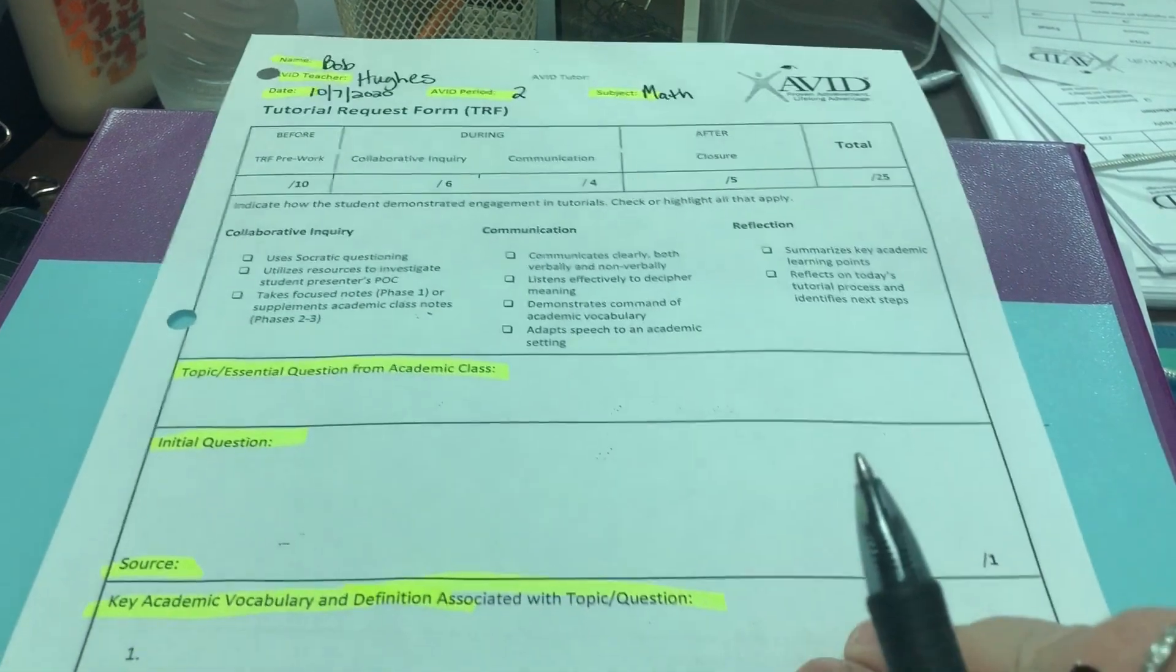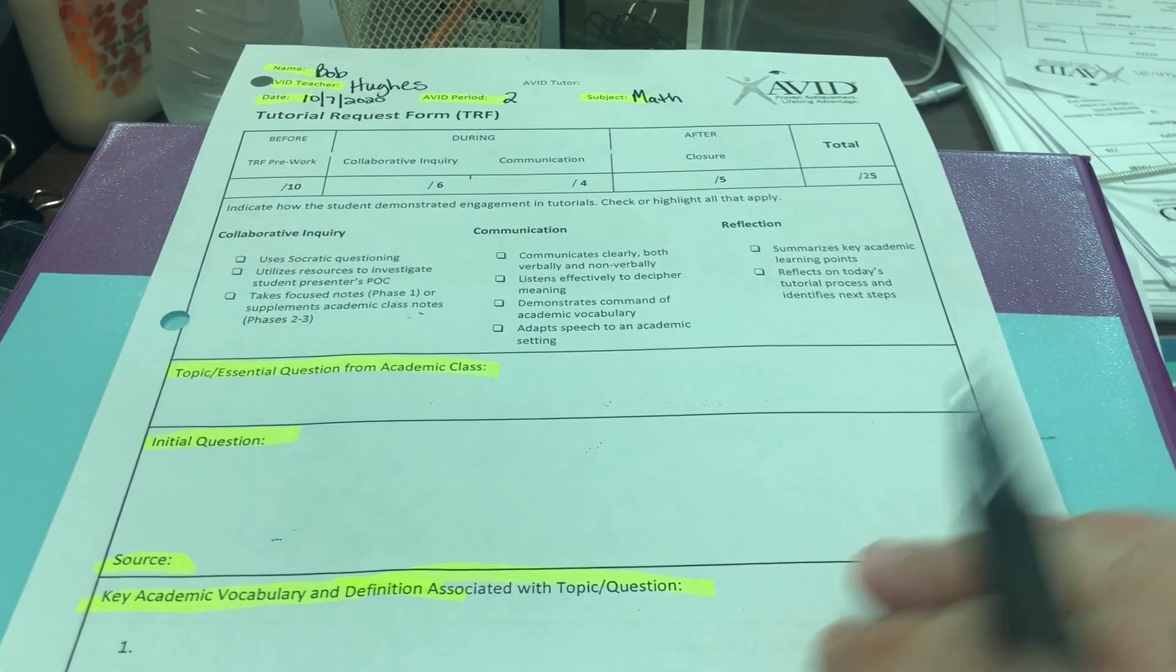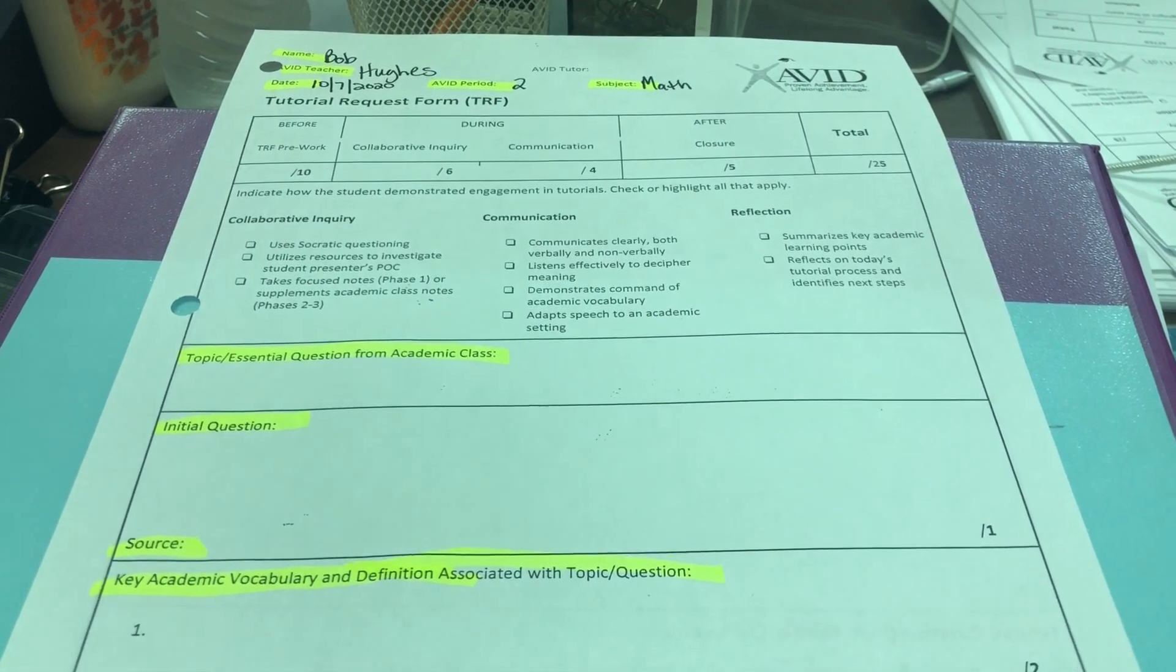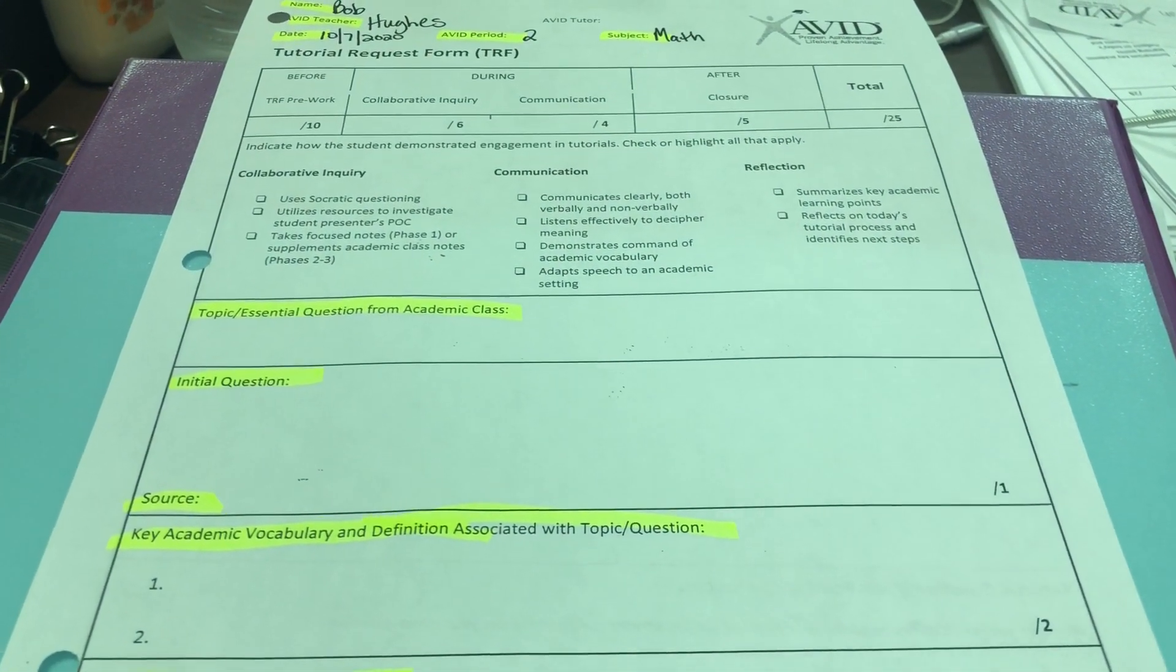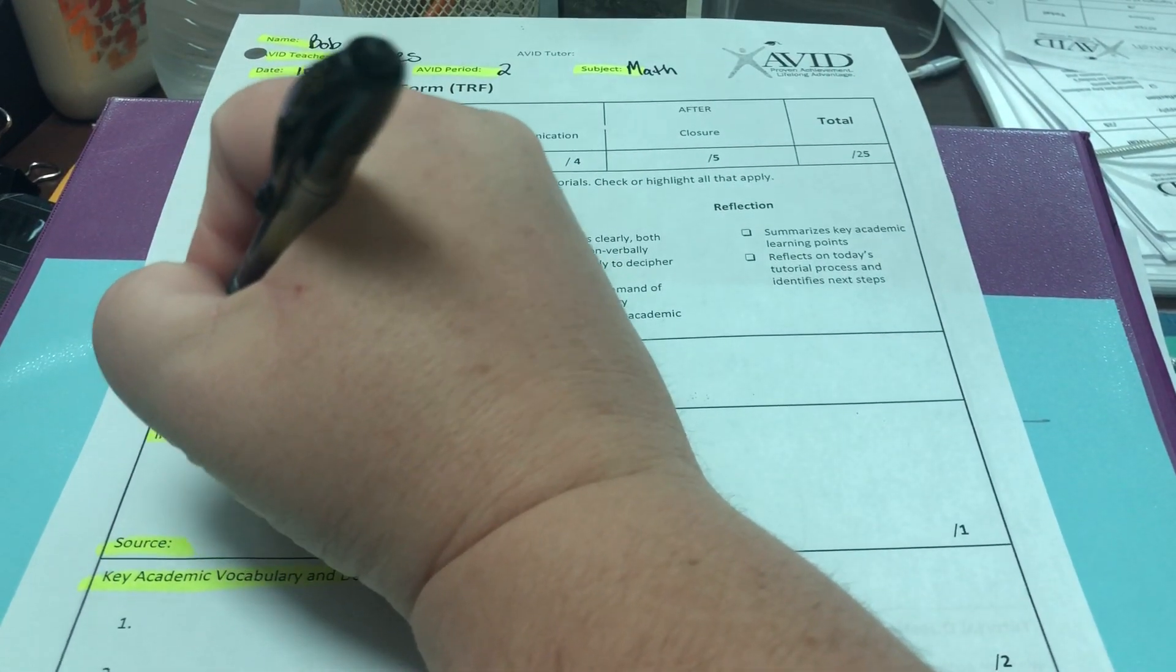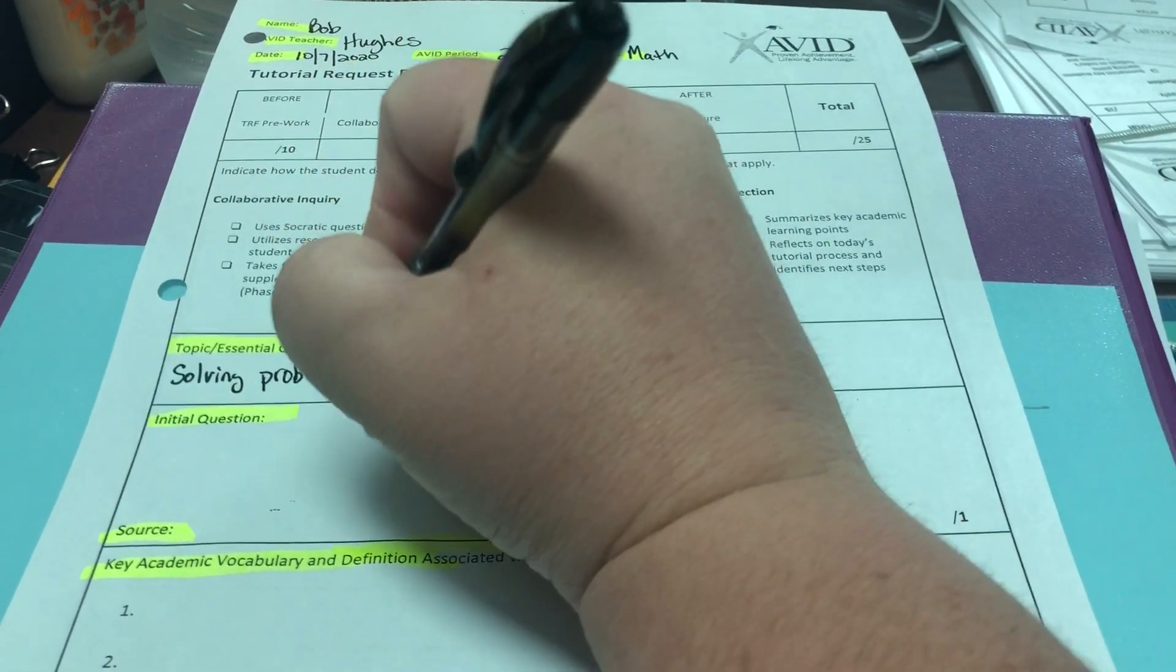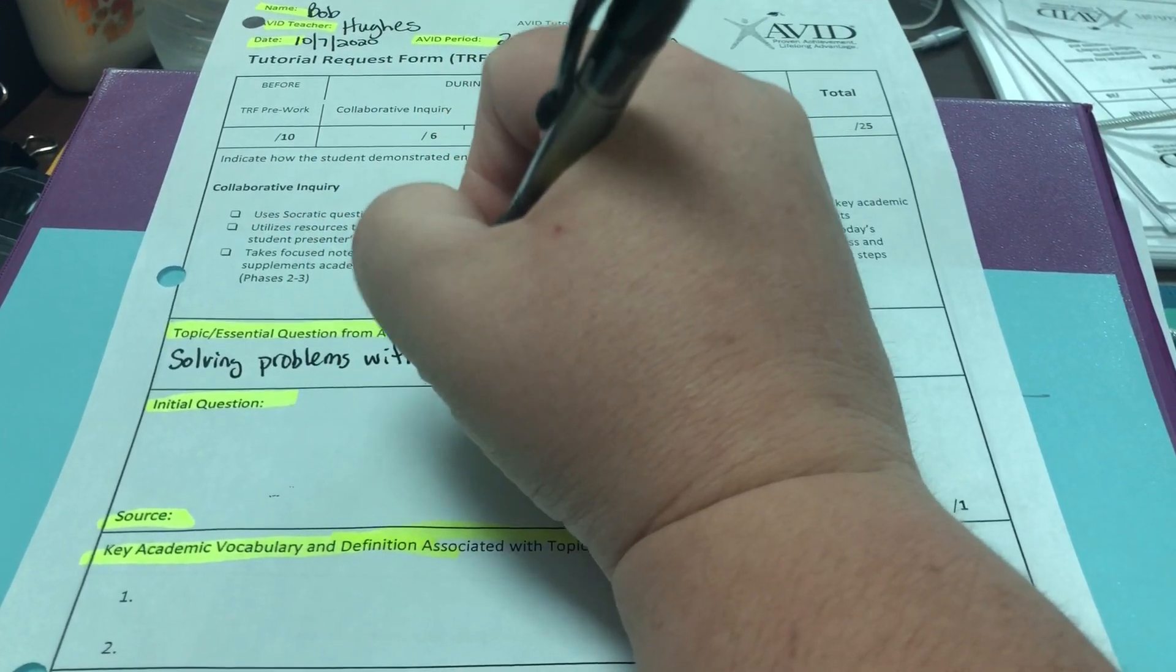Then I'm gonna go down here to my topic essential question from the academic class. The topic of the math homework was about solving problems with variables, so I can just write that: solving problems with variables.